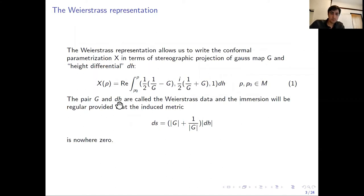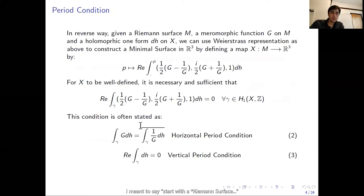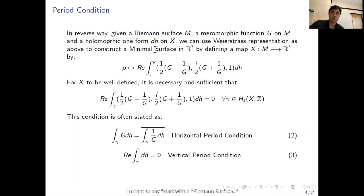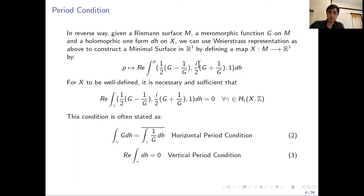This immersion will be regular provided that the induced metric is nowhere zero. So for every minimal surface we have a Weierstrass representation. Conversely, we can start with a meromorphic function G and a holomorphic one-form DH and define this map to construct minimal surfaces in three-dimensional space. The problem, however, is that we don't necessarily know this map is well-defined when we write a random G and DH — this is the so-called period problem. In this talk, to show the existence of minimal surfaces, we will try to solve the period problem. This is our main objective.